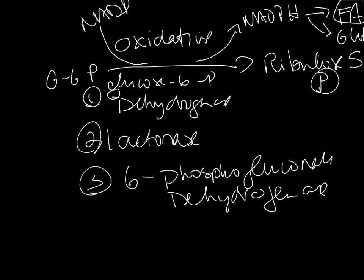So this is the irreversible part. Ribulose 5-phosphate is important for the synthesis of nucleotides. From that first part of the pathway, you're making ribulose. This is a precursor for nucleotide synthesis.